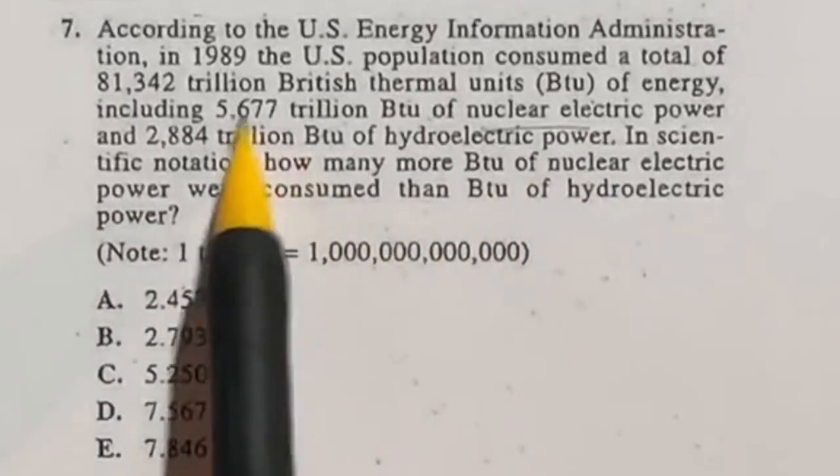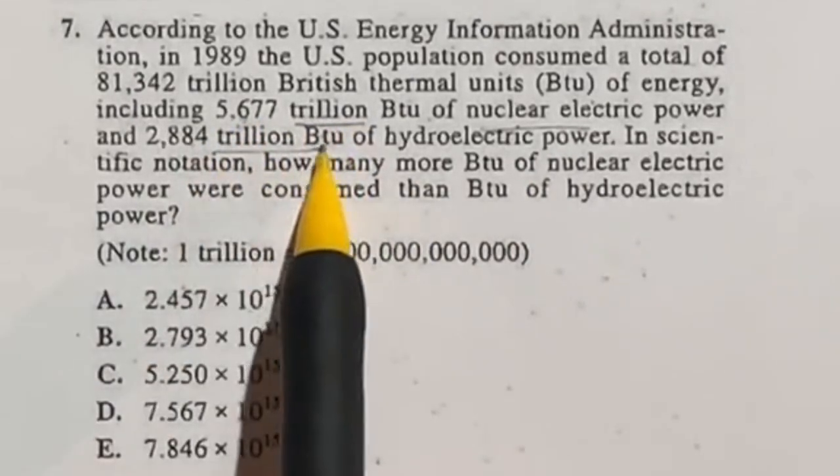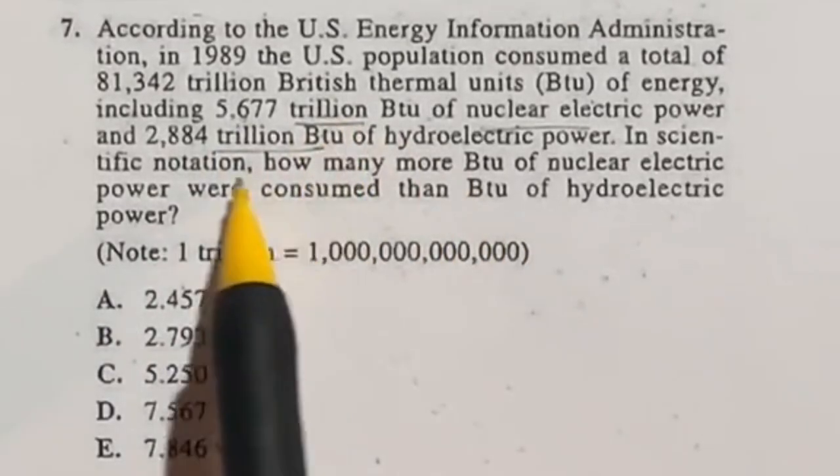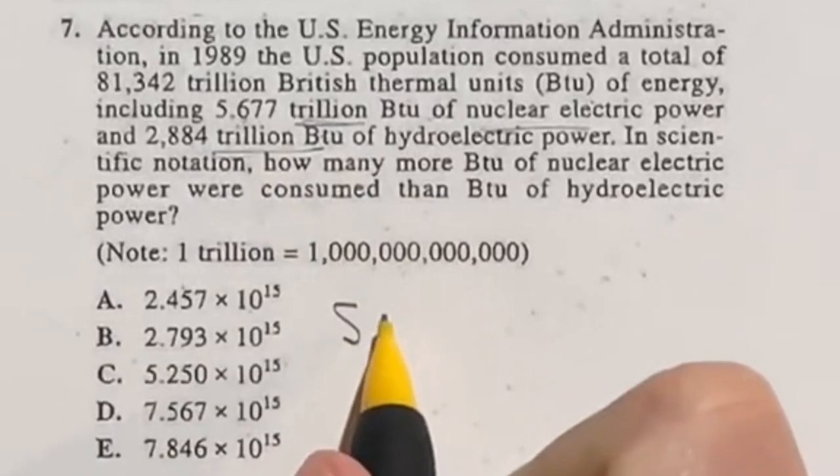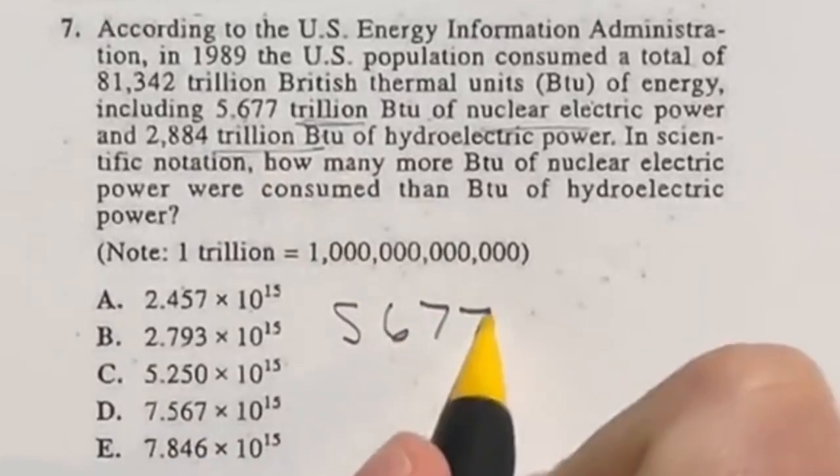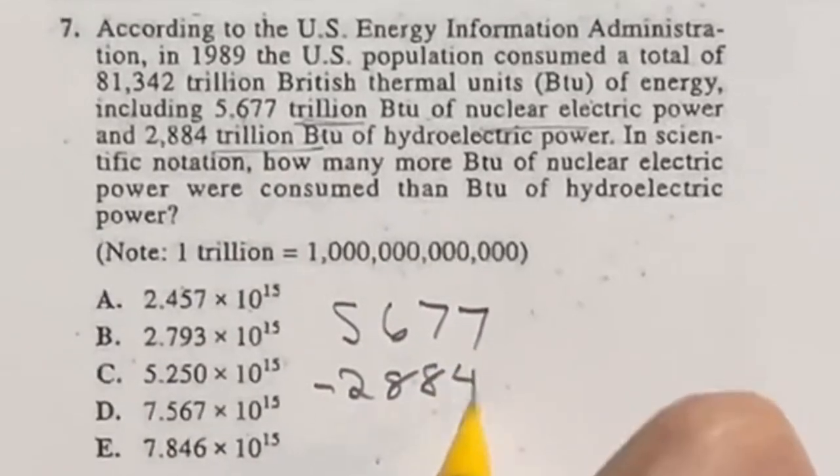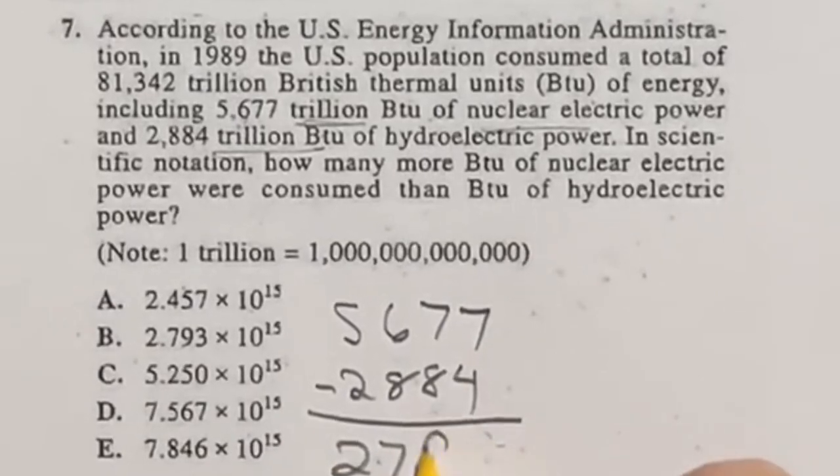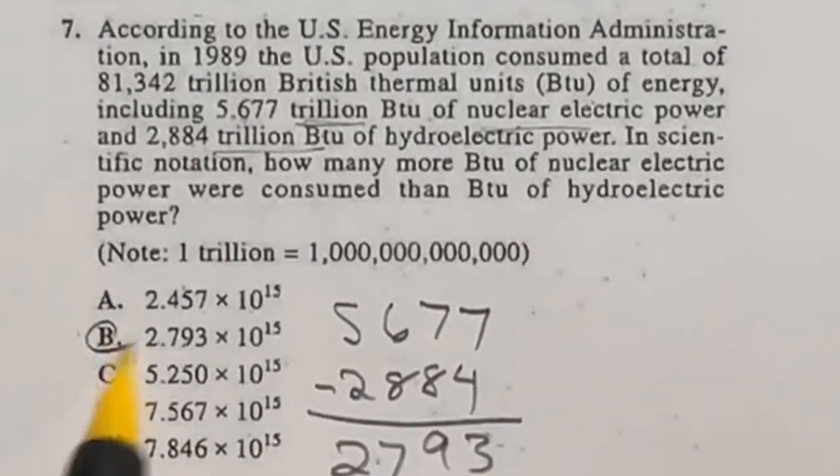So all we really have to do is subtract the two numbers here. Now since they're both in the trillions that means our answer is going to be in the trillions as well, but we don't have to worry about that when subtracting because all those zeros will cancel out with each other. So we're just looking at 5,677 minus 2,884. If you go ahead and do that subtraction out you're going to end up getting 2,793, which means our final answer here should end up being B.